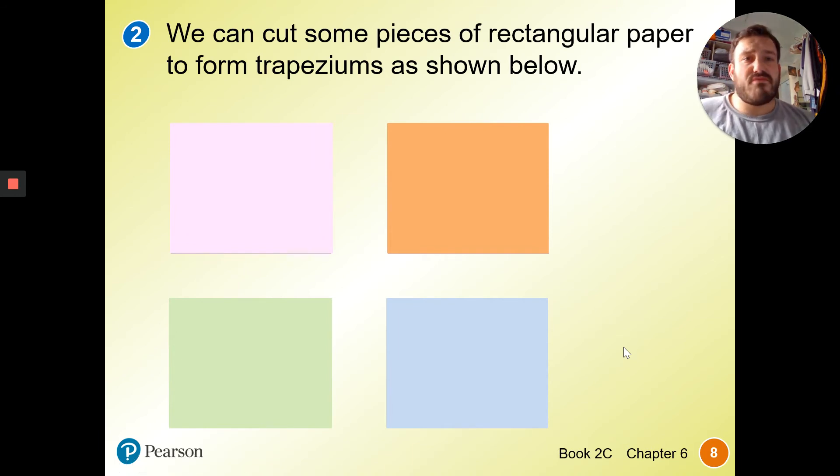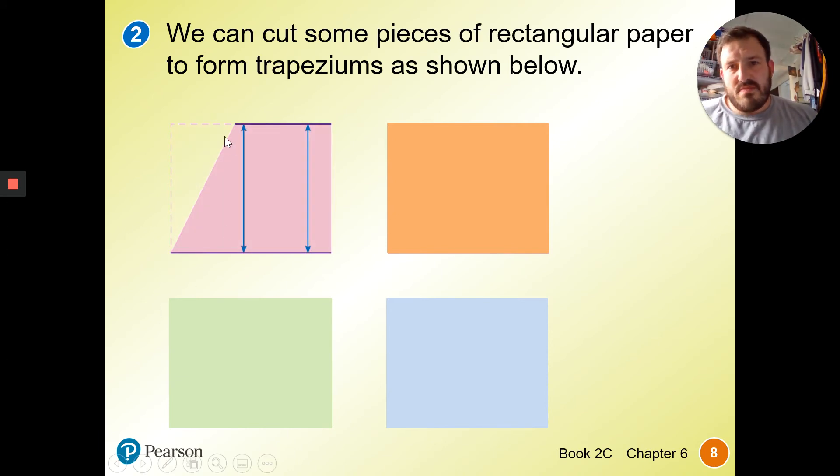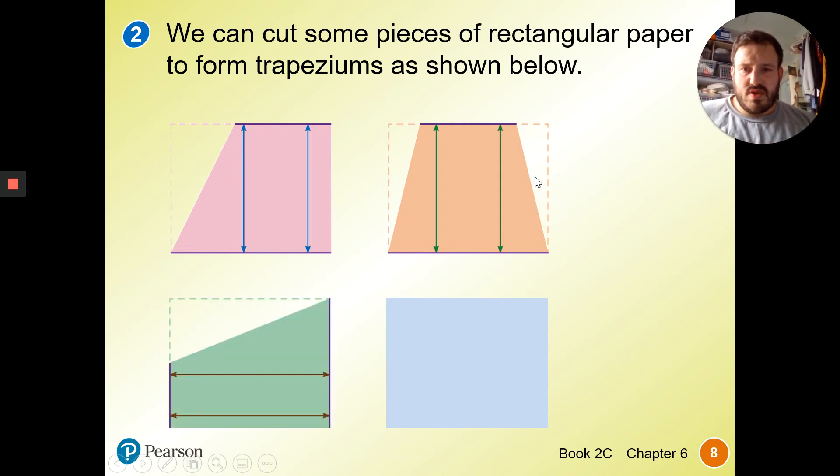We can cut some pieces of rectangular paper to form trapeziums, as shown below. If we make a cut this way, we can see that we made one trapezium here. We can make two cuts this way. We've got another trapezium. This is the same one as this, but in a different orientation. And we've got one which almost looks like a rhombus.